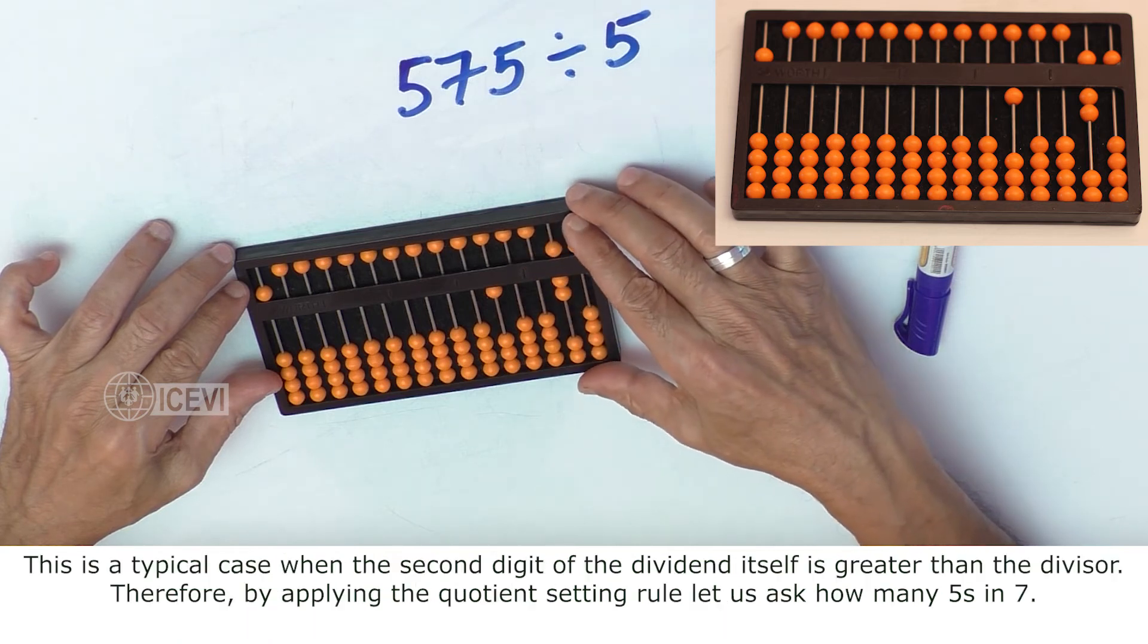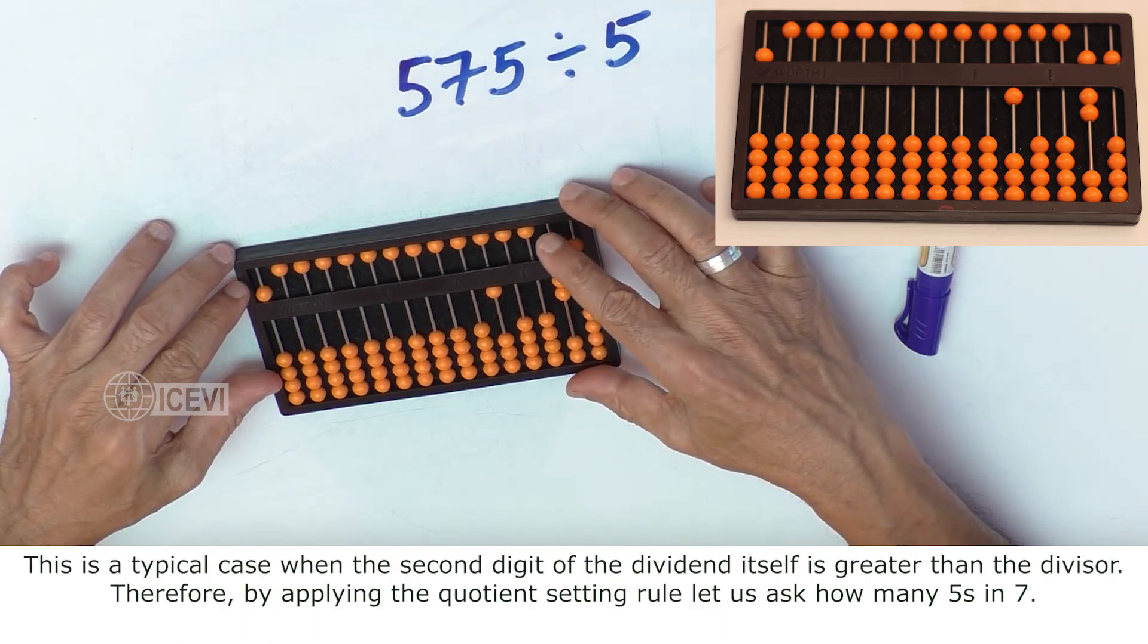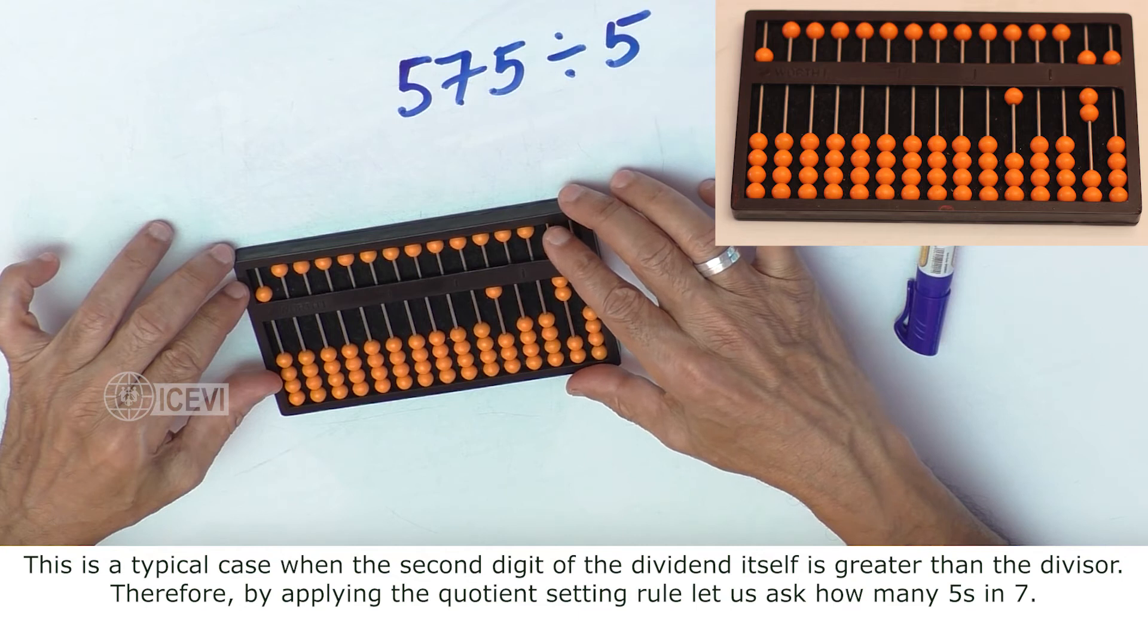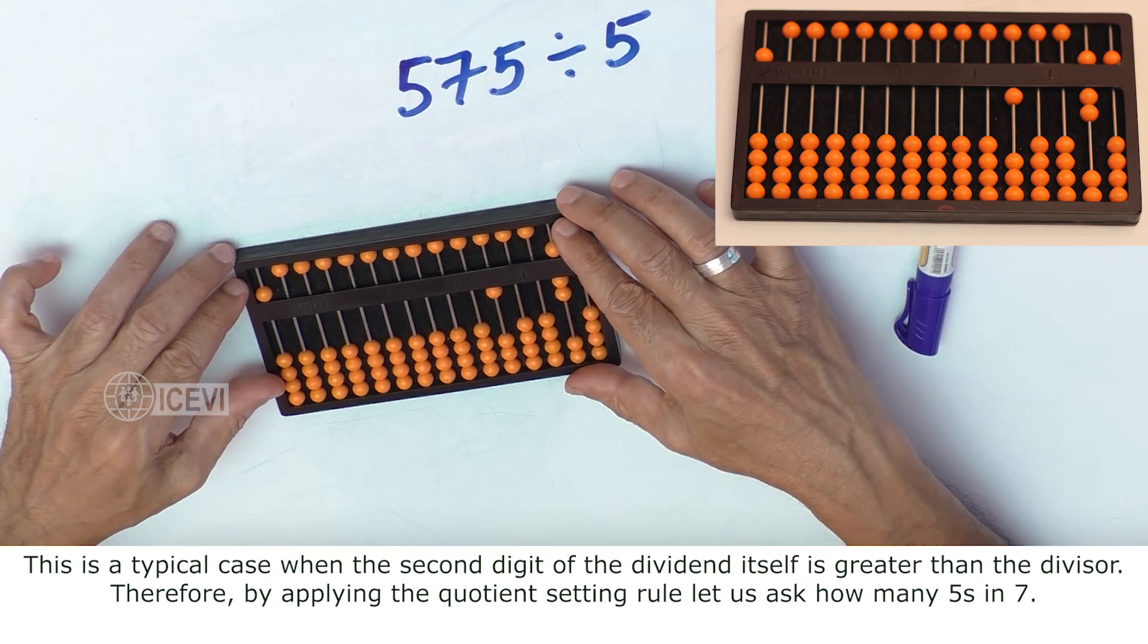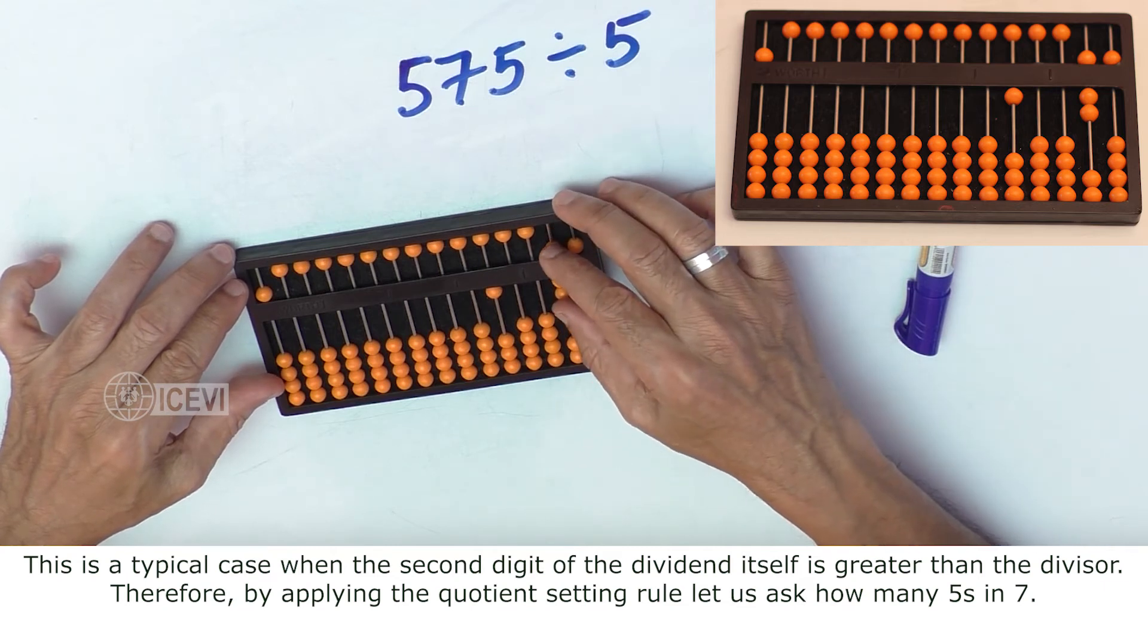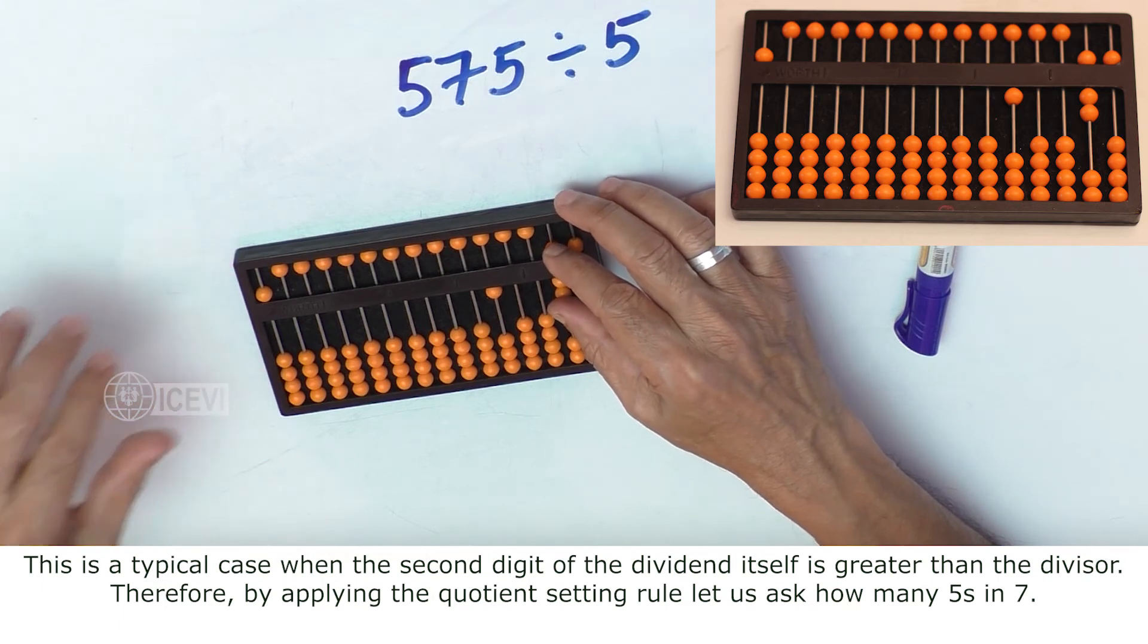This is a typical case when the second digit of the dividend itself is greater than the divisor. Therefore, by applying the quotient setting rule, let us ask how many 5's in 7.